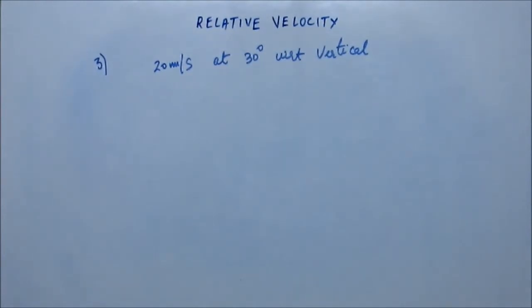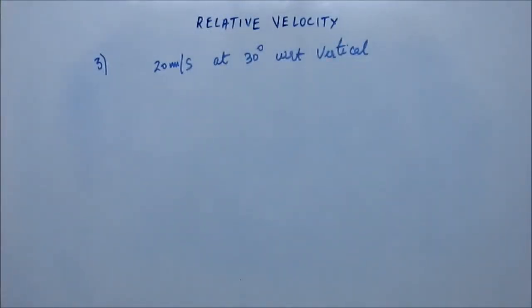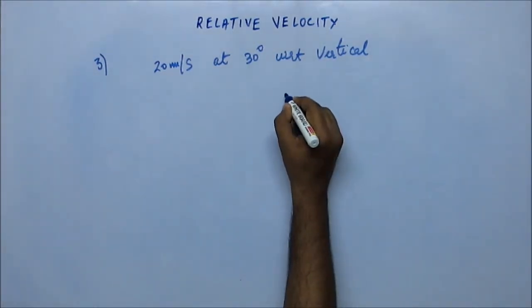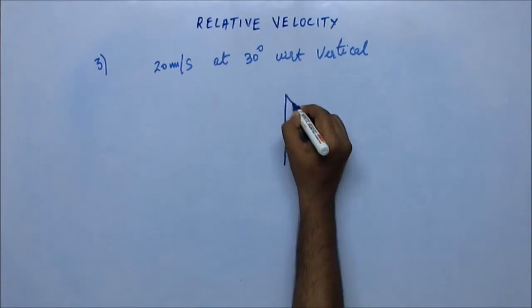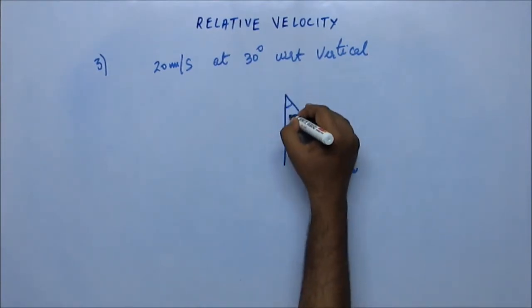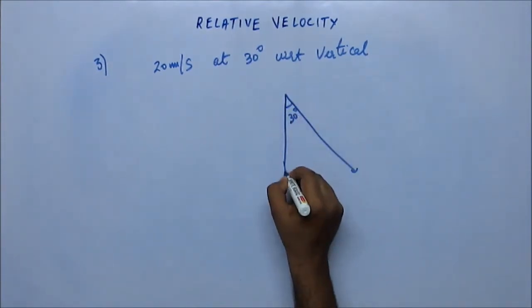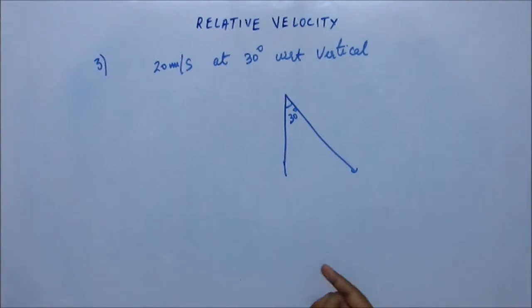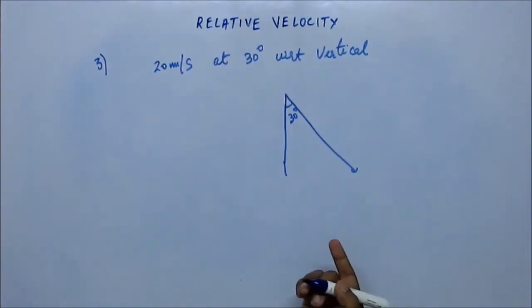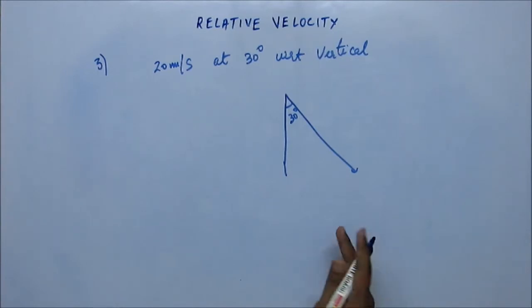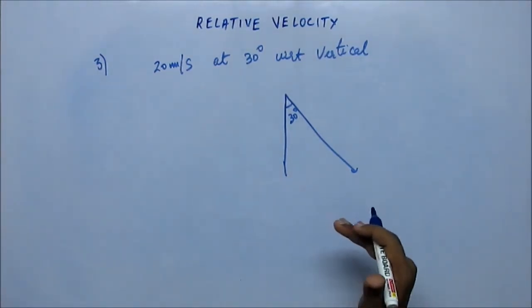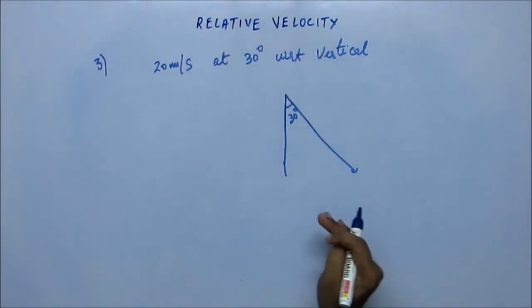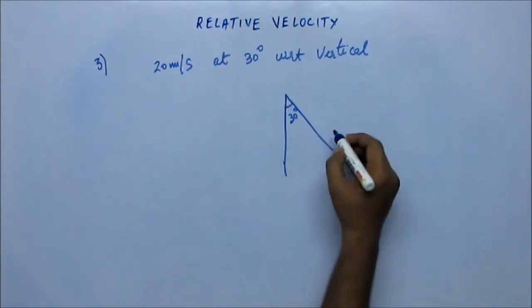The rain appears to him to be falling at 30 degrees with respect to vertical. He is moving, and still the rain appears to be falling at 30 degrees with respect to vertical — but on the other side. So the rain appears to the observer to be falling 30 degrees with respect to vertical on the other side.